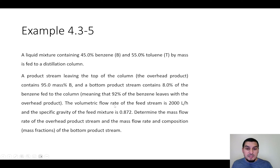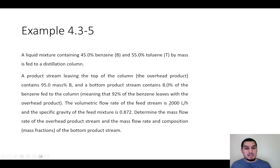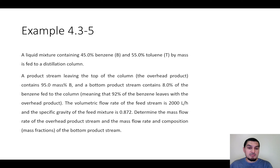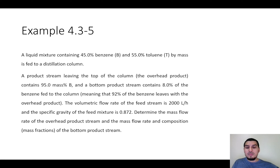We are told that the volumetric flow rate of the feed stream is 2000 liters per hour, and we know the specific gravity of the feed stream. From these two pieces of information we can calculate the mass flow rate — it's an indirect way of defining the mass flow rate. Finally, we are asked to determine the mass flow rate of the overhead product stream and the compositions of the bottom product.